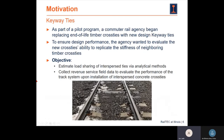As part of a pilot program, a commuter rail agency started to replace old deteriorated timber cross ties with new keyway cross ties. They also want to evaluate the performance of the keyway cross tie — whether they are able to replicate the stiffness of neighboring timber cross ties. Based on that, the objectives of this project are: first, estimate load sharing of interspersed ties via analytical methods; and second, collect revenue service field data to evaluate the performance of the track system upon installation of interspersed concrete cross ties.